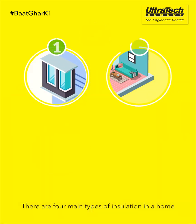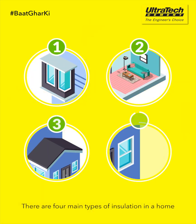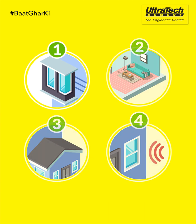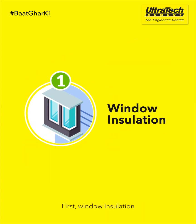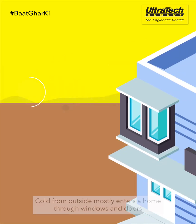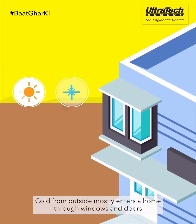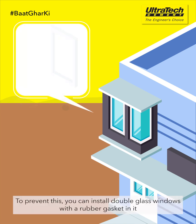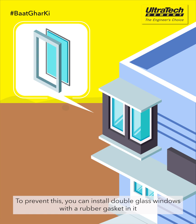There are 4 main types of insulation in a home. First, window insulation. Cold from outside mostly enters a home through windows and doors. To prevent this, you can install double glass windows with a rubber gasket in it.